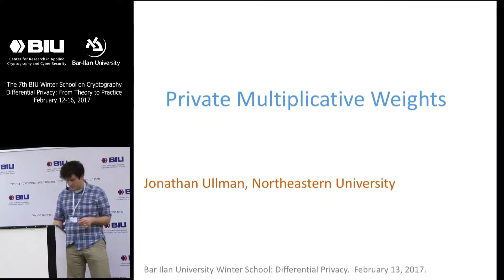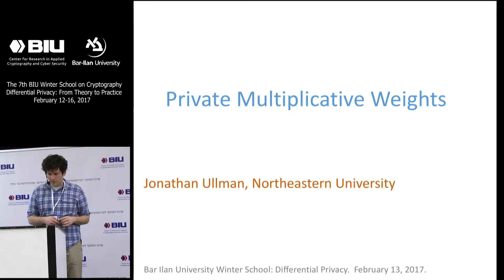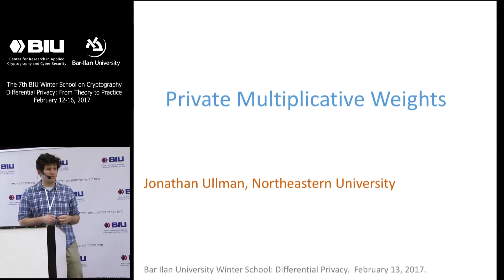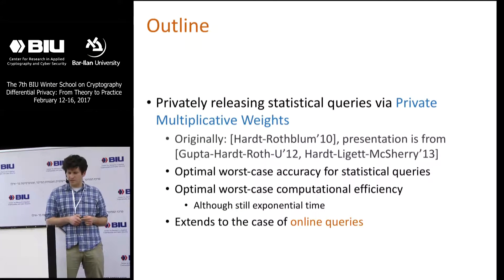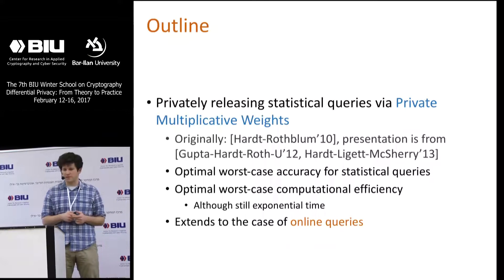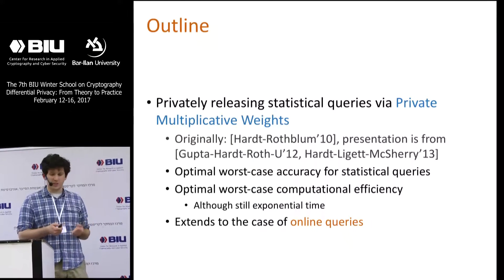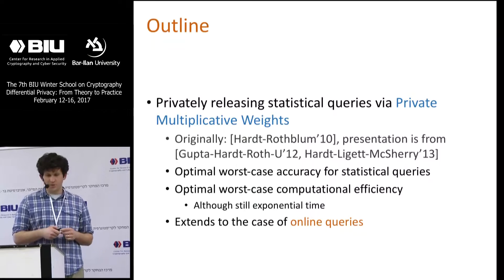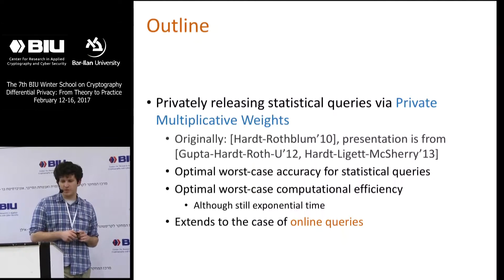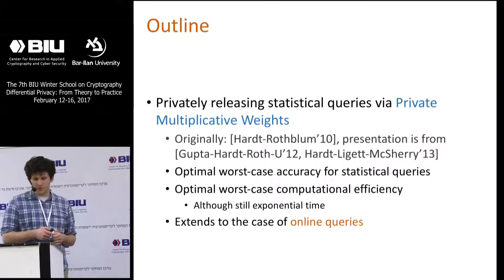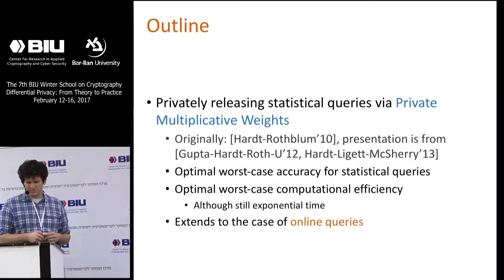Thanks everyone for sticking around to the last talk of the day. I'm going to talk about a really elegant and central algorithm in differential privacy called private multiplicative weights. This algorithm solves the same problem that the SmallDB algorithm solves - it's an algorithm for releasing exponentially many statistical queries, also called linear queries. This comes from a nice paper by Hardt and Rothblum in 2010, though the presentation is compiled from a number of papers.